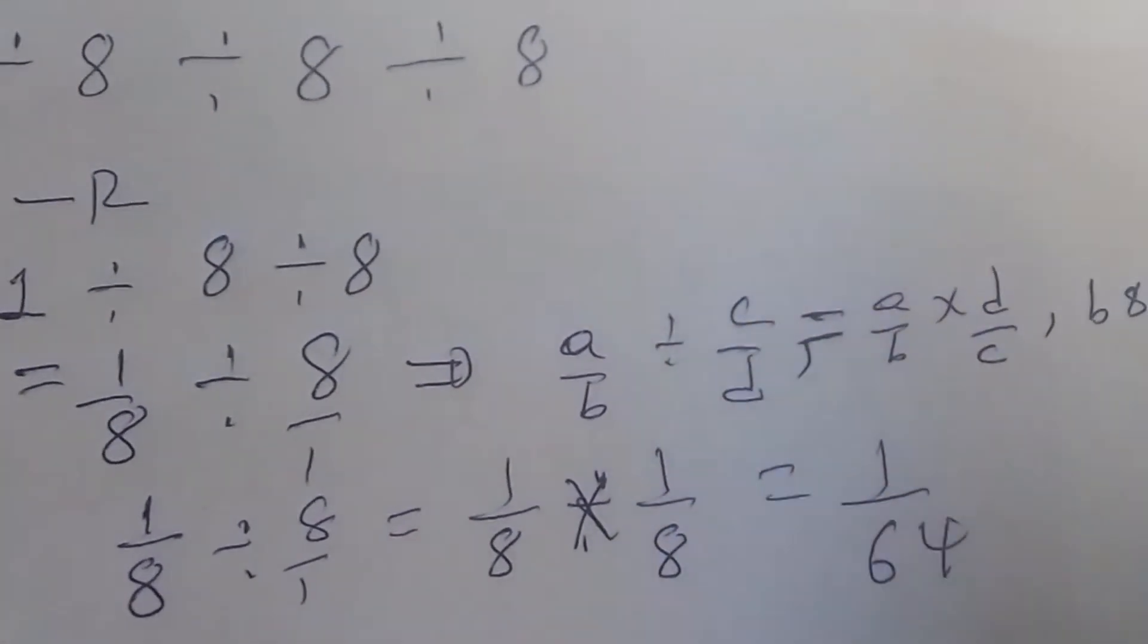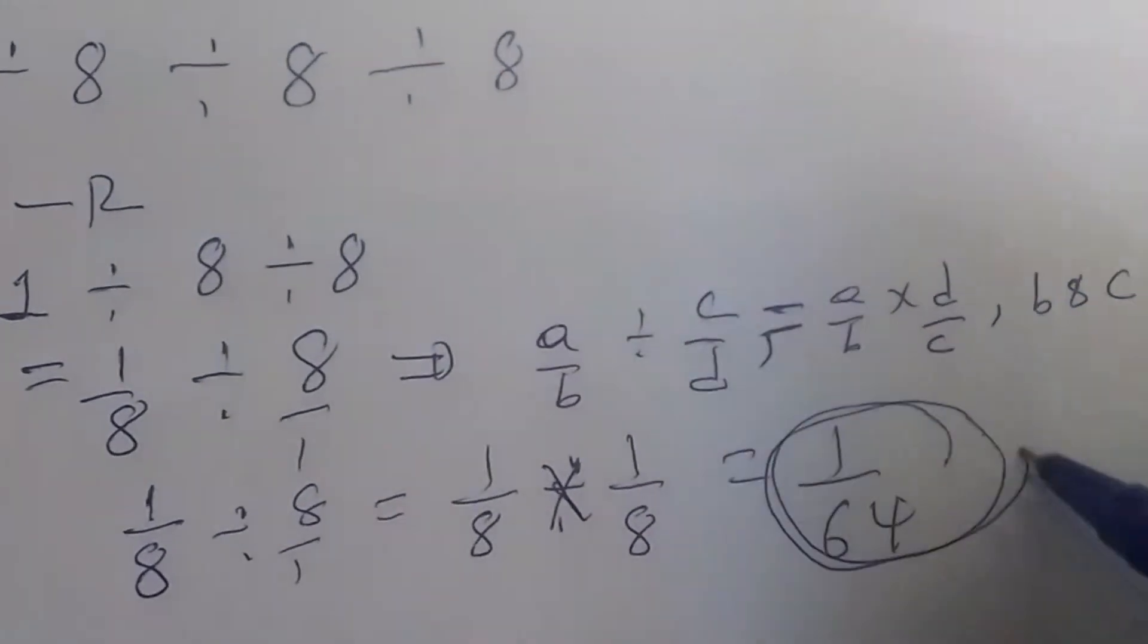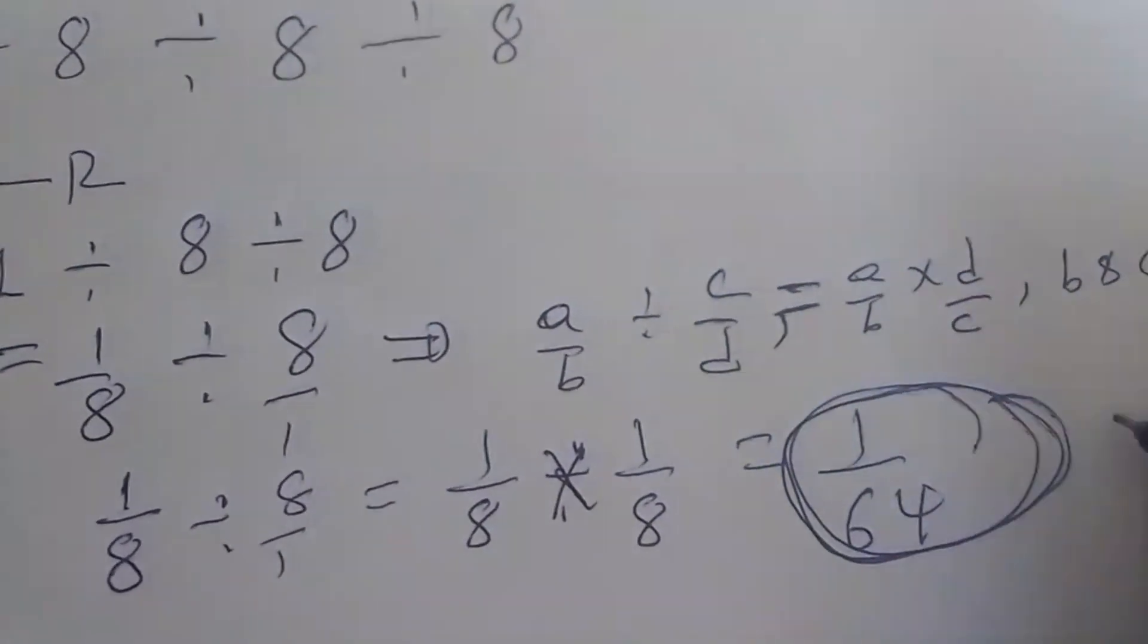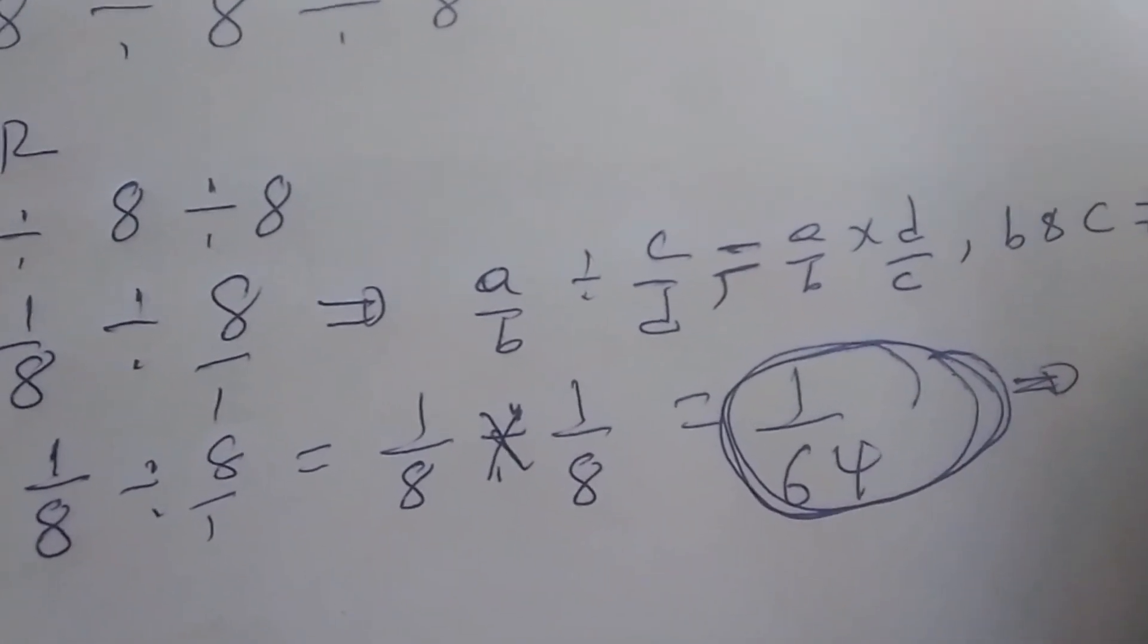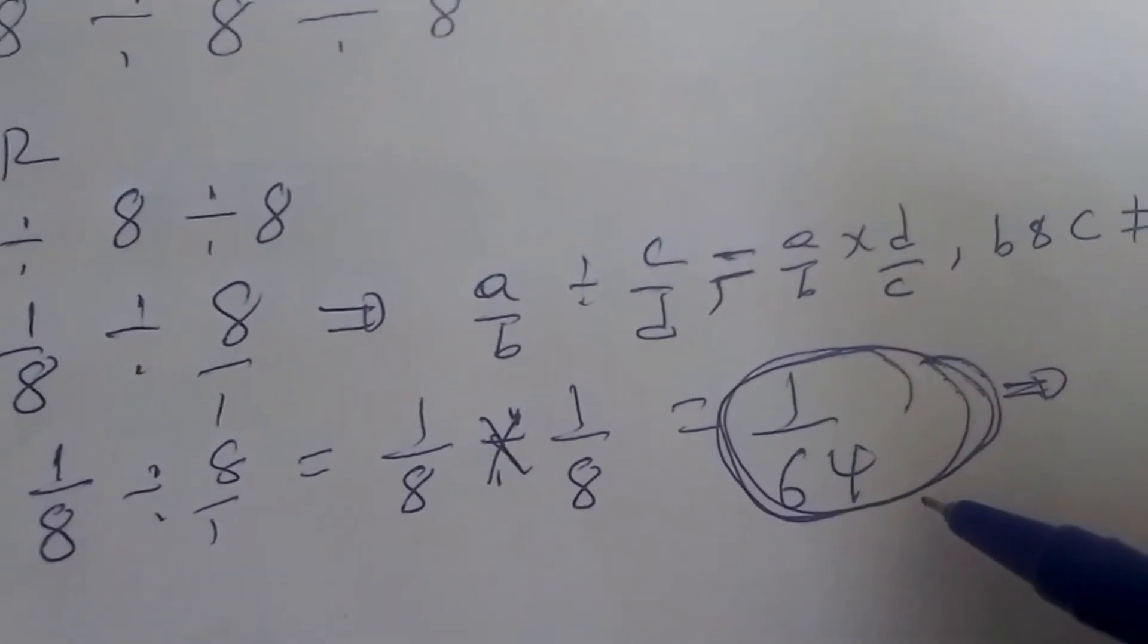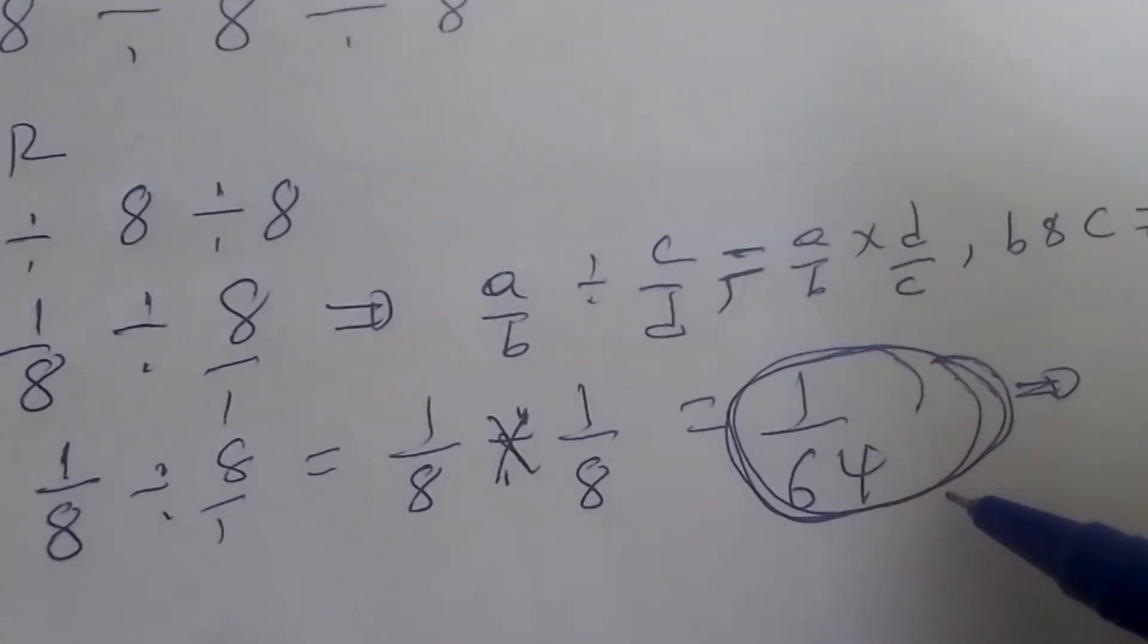1 over 64 is the answer. You can put it in decimal form, for instance, but the answer is 1 over 64.